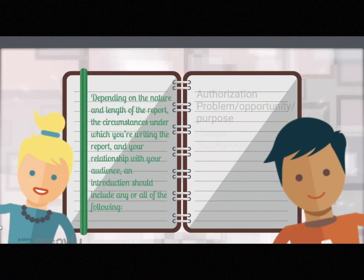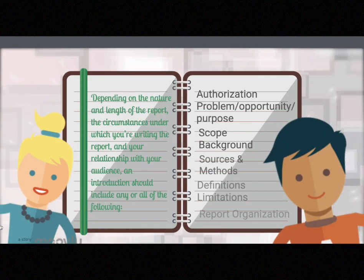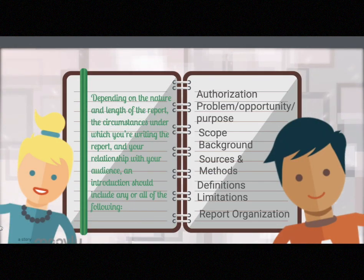A report introduction should include any or all of the following. Authorization — as in when, how, and by whom the report was authorized, and who wrote it.